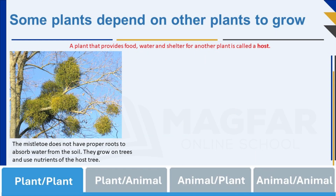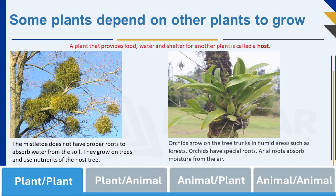Some plants depend on other plants to grow. A plant that provides food, water, and shelter for another plant is called a host. The mistletoe does not have proper roots to absorb water from the soil; they grow on trees and use the nutrients of the host tree. Orchids grow on tree trunks in humid areas such as forests and have special aerial roots that absorb moisture from the air. These are examples of plants depending on other plants for survival.